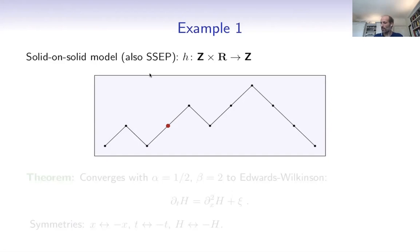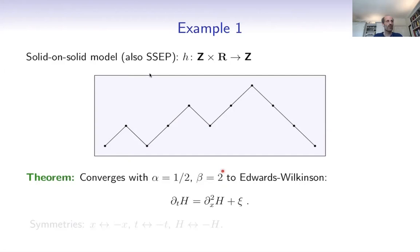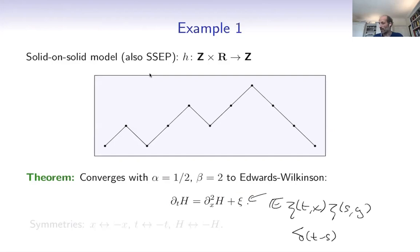It is very well known that here, if you take exponents beta equal two — that's the diffusive scaling in time — and alpha equal one half, so you rescale the height function by epsilon to the one-half, then this converges to the Edwards-Wilkinson model, or the stochastic heat equation: the heat equation with a space-time white noise term. Here psi is space-time white noise, which means formally psi of (T,x) and psi of (S,y) are delta-correlated both in space and in time.